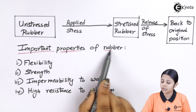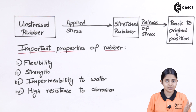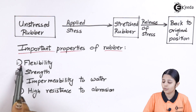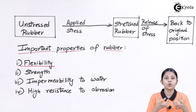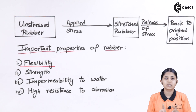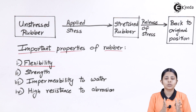Let us see the important properties of rubber. The first property is elasticity, of course. Apart from that, we have the property of flexibility. What do we mean by flexible? If there is human intervention or pressure applied by a machine, the rubber is flexible to that change — it will undergo the change, and once the stress is removed, it will come back to its original dimensions.